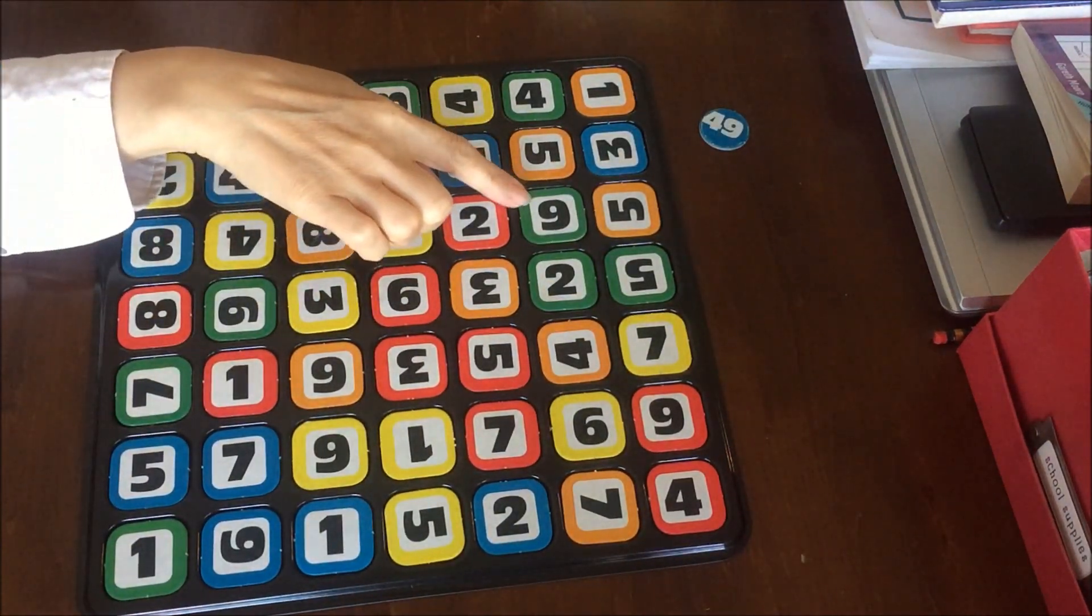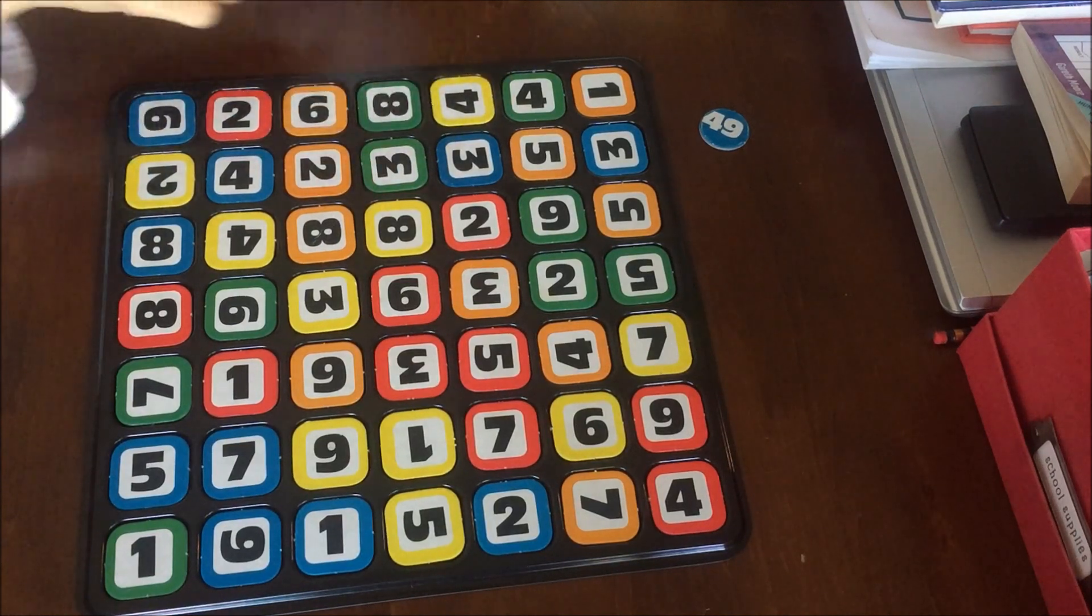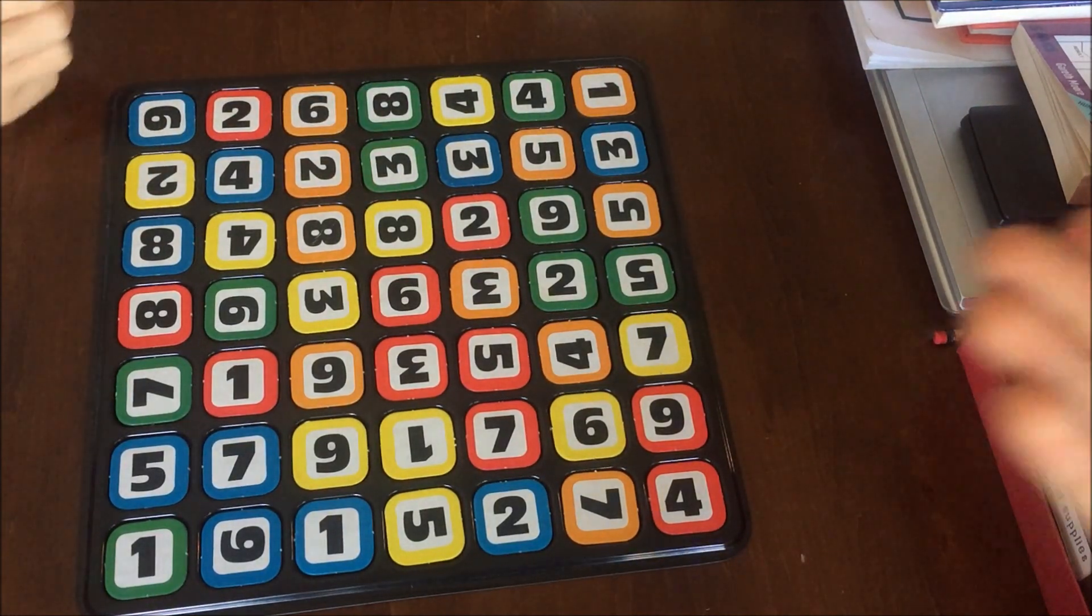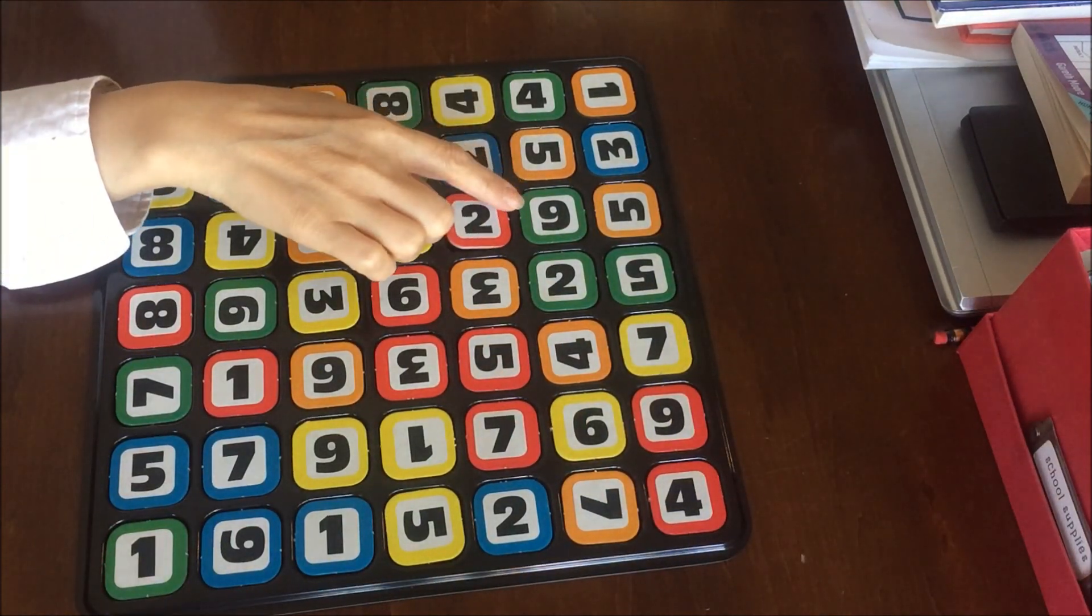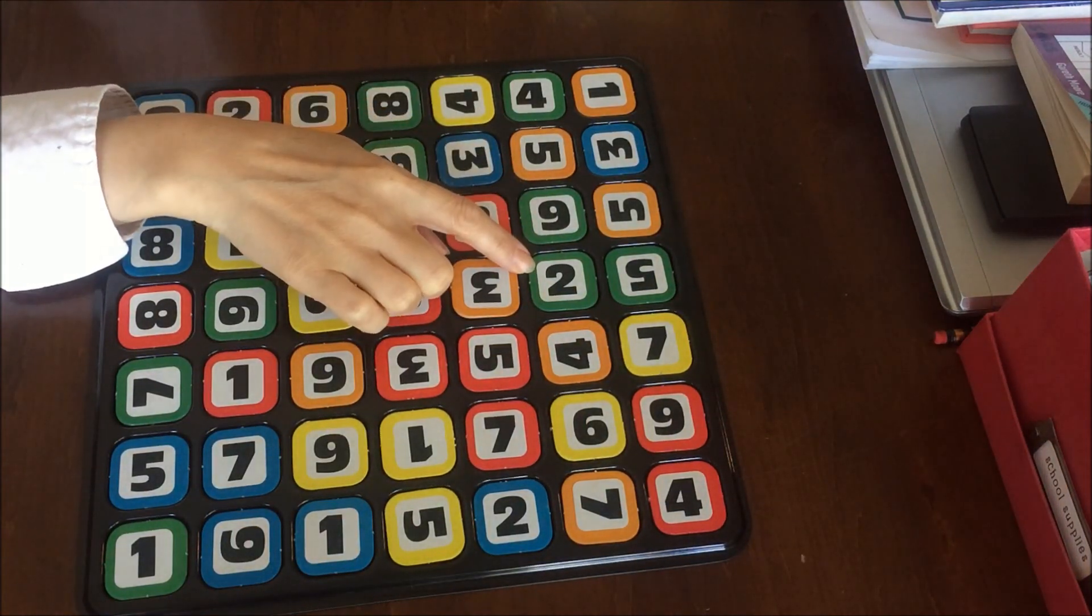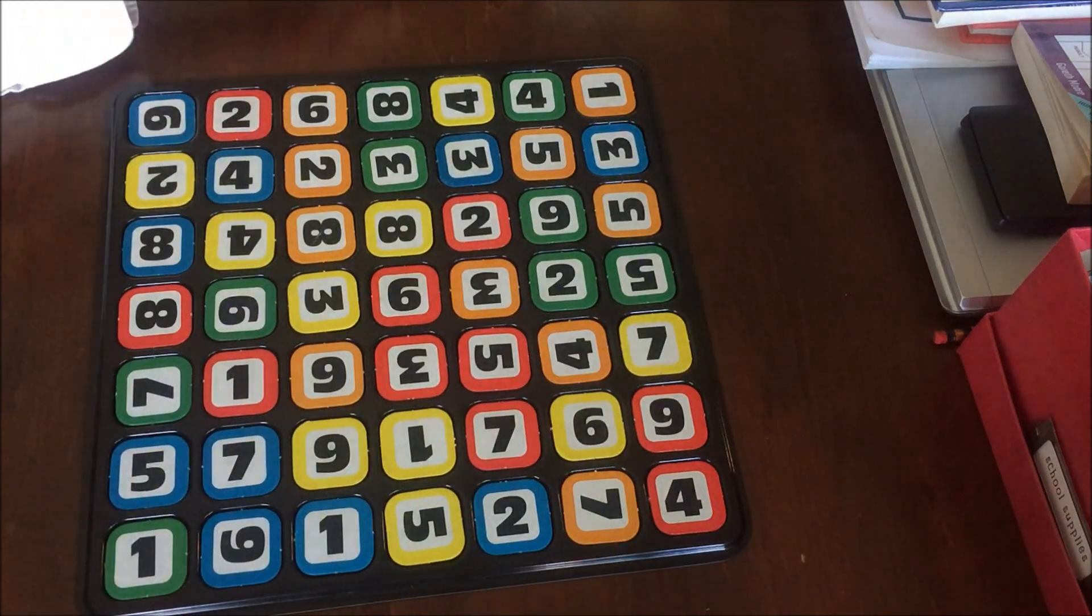Now all the numbers need to be vertical, horizontal, or diagonal. You can't do a corner. So let's try 43. That's 5 times 9 is 45, minus 2 makes 43.